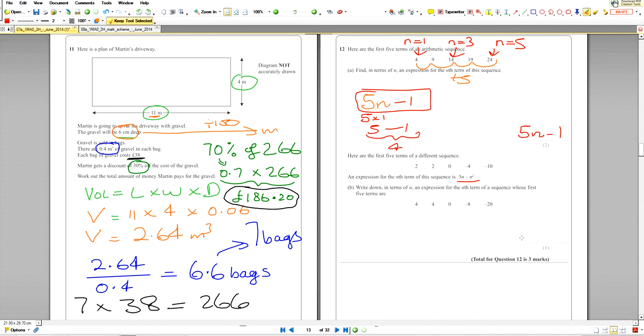So what happens to the rule? We just double the rule, so it'll be 2 lots of 3n minus n squared.